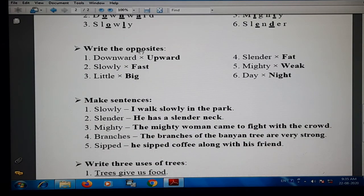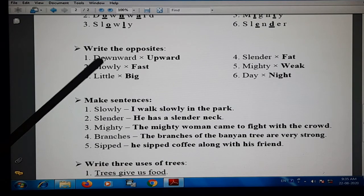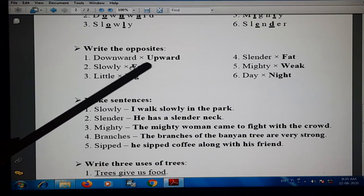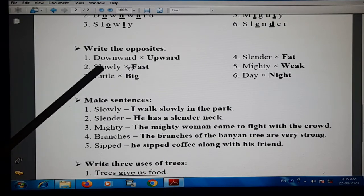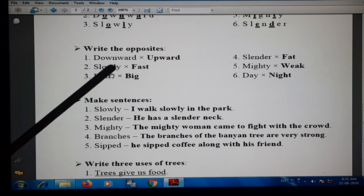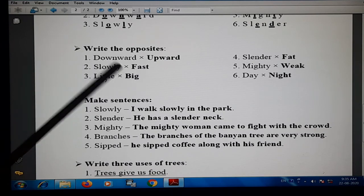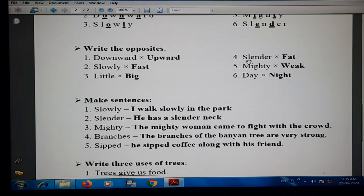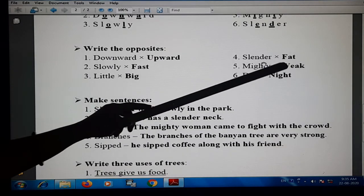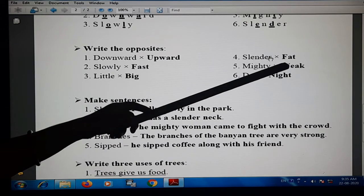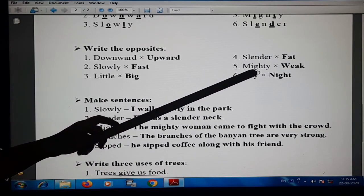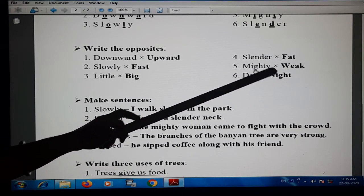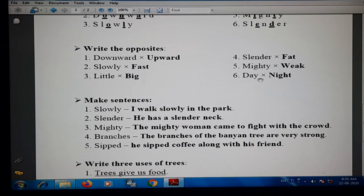Then write the opposites. First one is downward, opposite is upward. Number two, slowly, opposite is fast. Number three, little, big. Number four, slender, fat. Number five, mighty, weak. Then six, day, night.